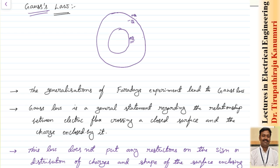In other words, he observed that when we keep a charge Q inside some surface, automatically the amount of flux lines coming out of that surface will be equal to the value of the charge that is enclosed. That means he observed that the amount of flux lines is equal to the charge enclosed.